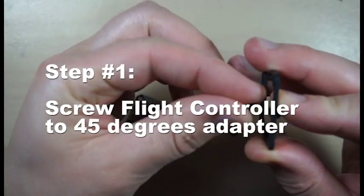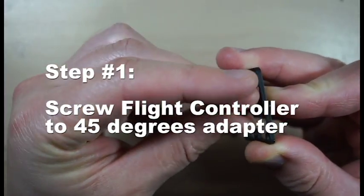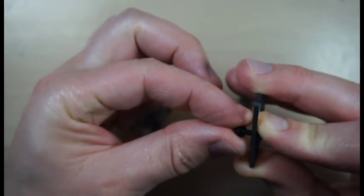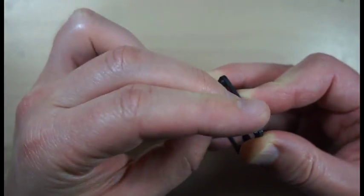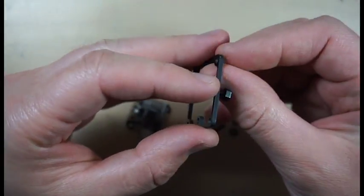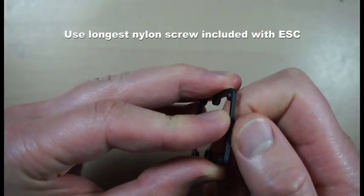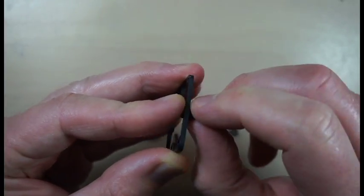First we are going to mount flight controller to carbon fiber adapter with long nylon screw which can be found with FX20A speed controller you received. Just insert nylon screw and then screw nylon nut from the other side of the adapter.